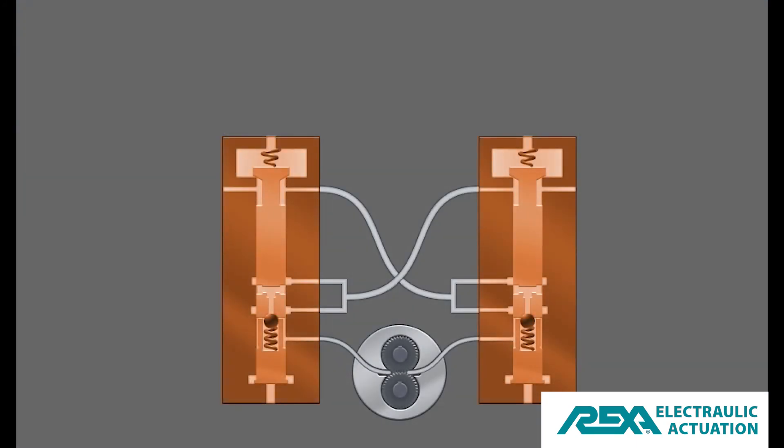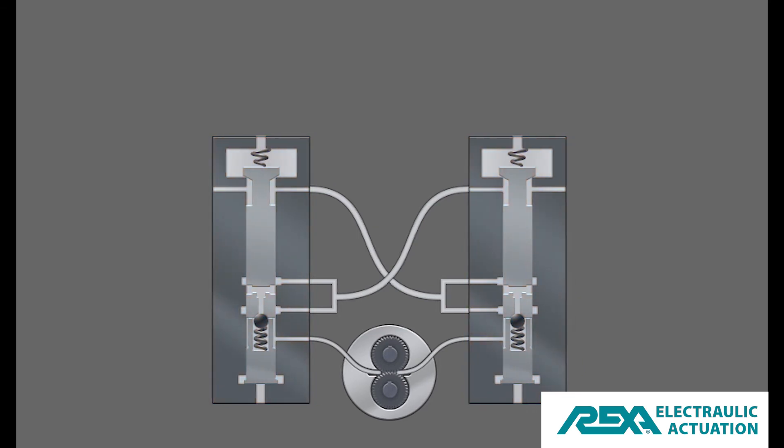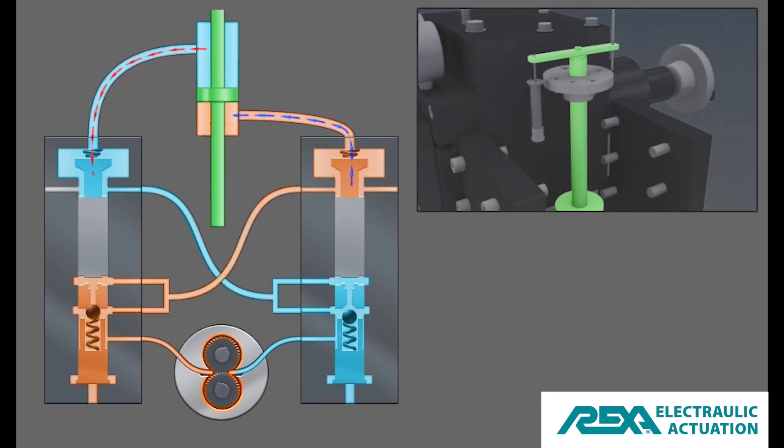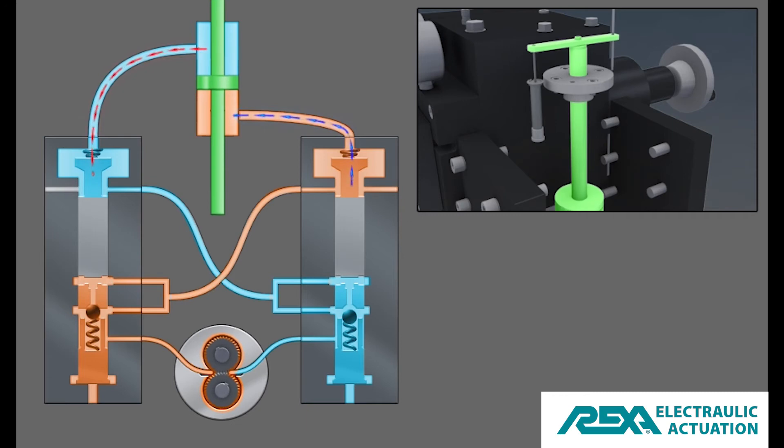The flow match valves are a unique pilot check valve flow control type design. The design allows for a constant oil volume to be moved back and forth from one side of a double acting cylinder to the other. This happens in a smooth and stable manner regardless of the applied load or any load variations, including bidirectional dynamic loads, from zero load to full actuator output.